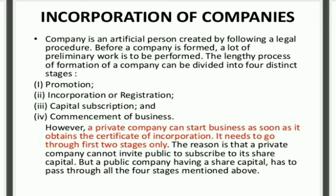What is basically incorporation of a company? A company is an artificial person created by law or by following legal procedures. Before a company is formed, a lot of preliminary work is to be performed. The lengthy process of formation of a company can be divided into four distinct stages: promotion, incorporation or registration, capital subscription, and commencement of business.